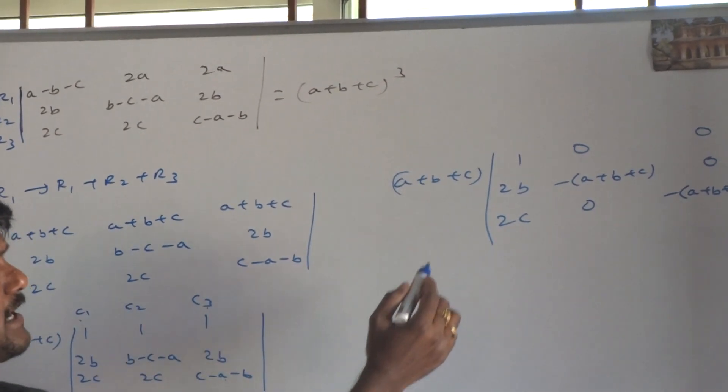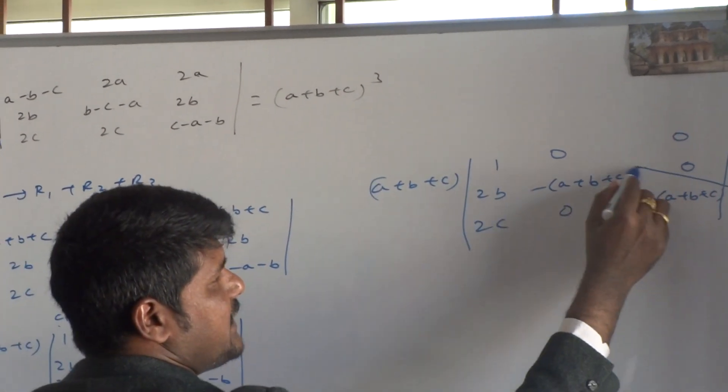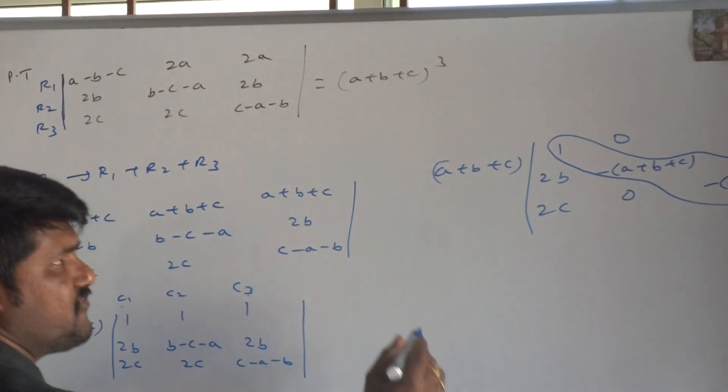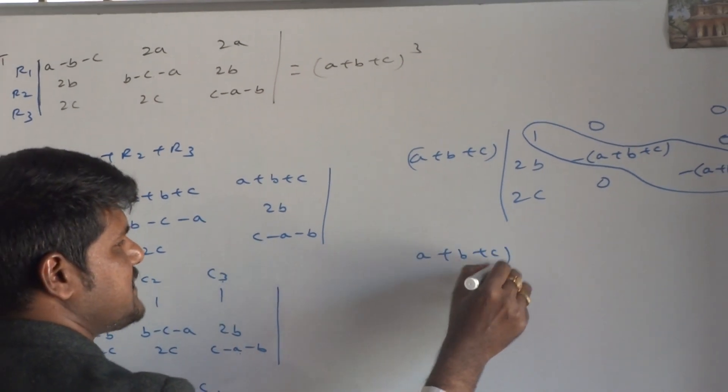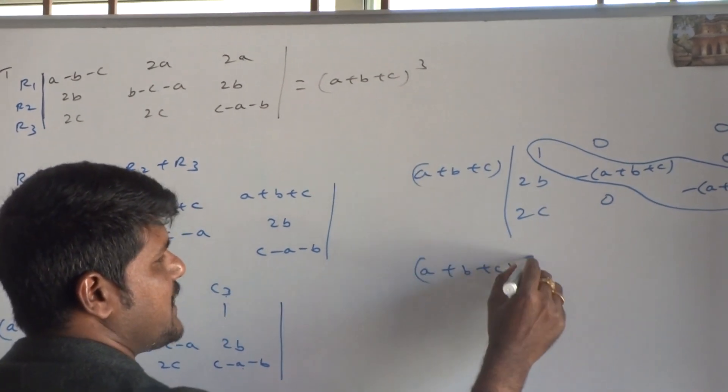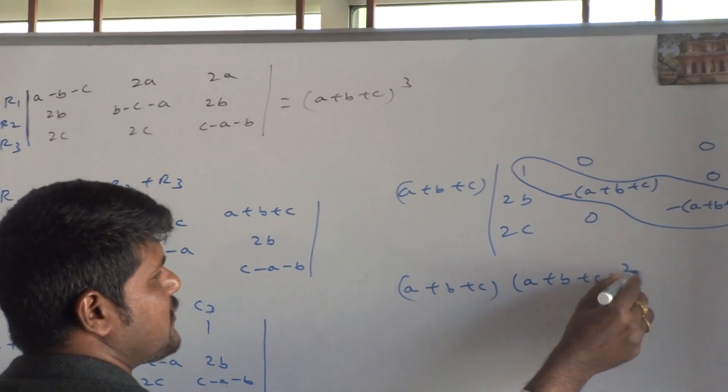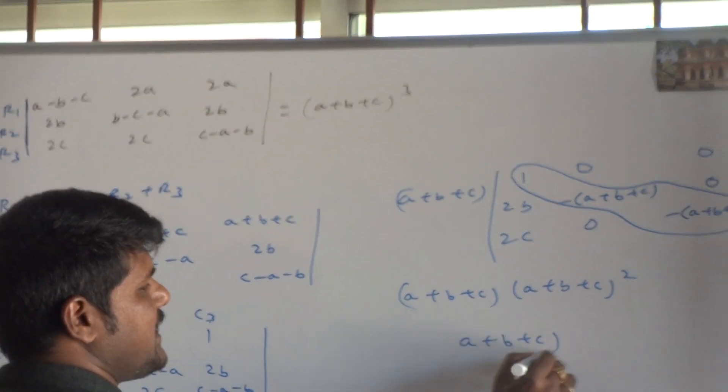It is looking like lower triangular matrix. Then, if you want to expand this, product now. A plus B plus C into, if you multiply this to minus or minus plus, A plus B plus C whole squared. Total answer: A plus B plus C.